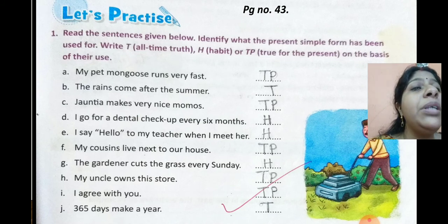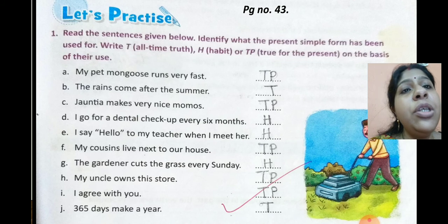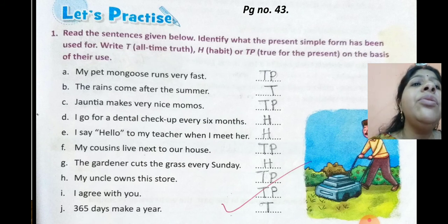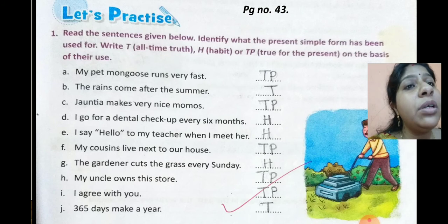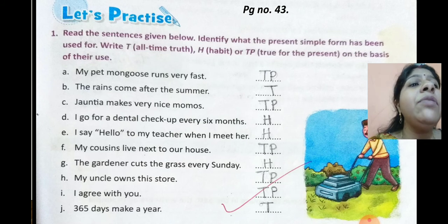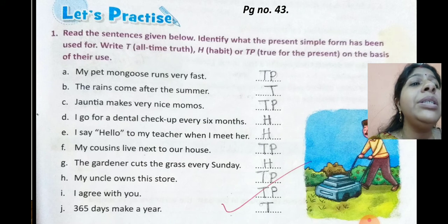Identify what the simple present form has been used for. Write T if the statement indicates all-time truth, write H if it is about a habit, and write TP if it is true for the present.